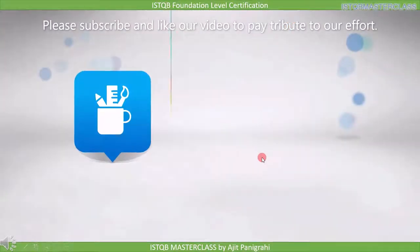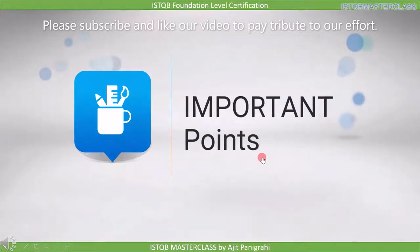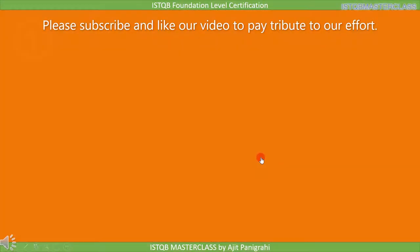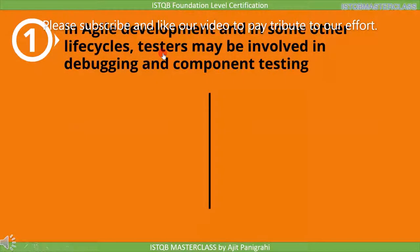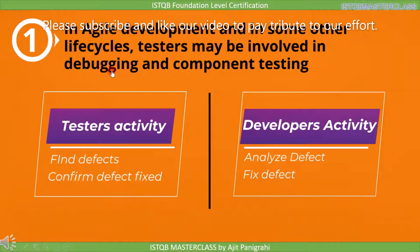Before we end this lecture, let's review the important points. In agile development and some other life cycles, the tester may be involved in debugging and component testing. Testing activities include finding defects and confirming defects are fixed, whereas the developer's activities are to analyze and fix those defects. With this, we end this lecture.